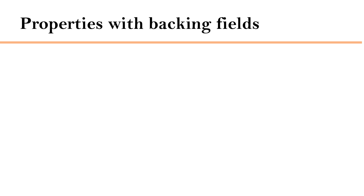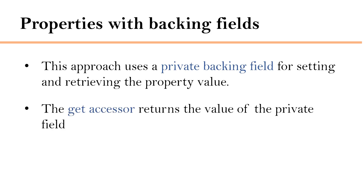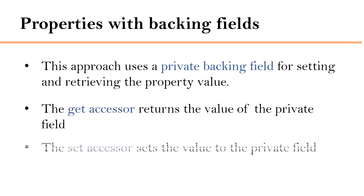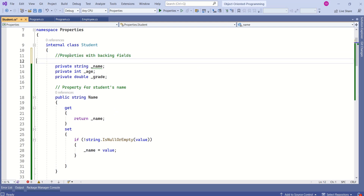Properties with backing fields: this approach uses a private backing field for setting and retrieving the property value. The get accessor returns the value of the private field and the set accessor sets the value of the private field. What we have seen in this example are the properties with backing fields.